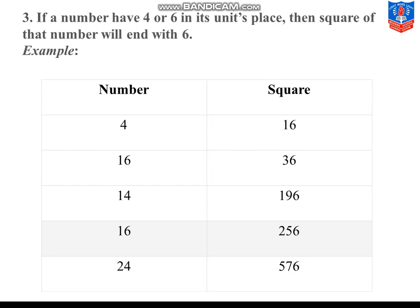Next property: if a number has 4 or 6 in its units place, then square of that number will end with 6. 4 or 6 jin ki bhi unit place hai, we've already discussed. 4² is 16, uska unit place is 6. 16² is 256, unit place 6. 14² unit place 6, 16² unit place 6, 24² unit place 6, 34² unit place 6. You can also check for other numbers too.